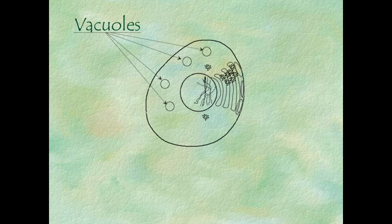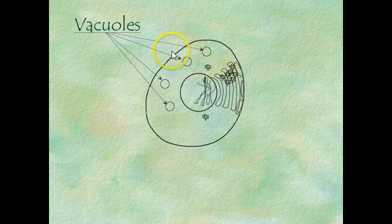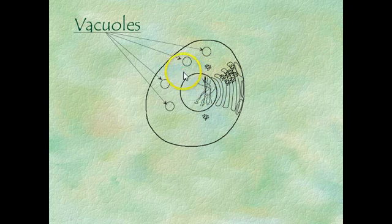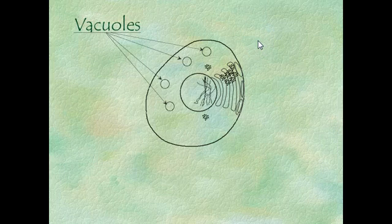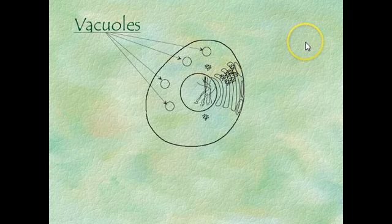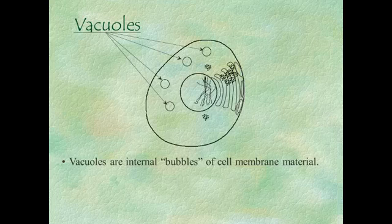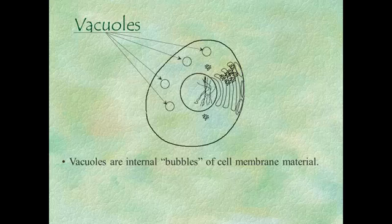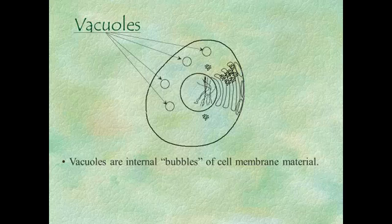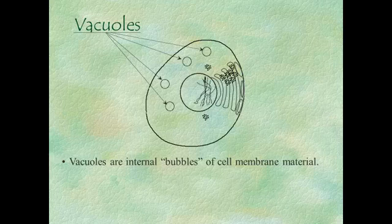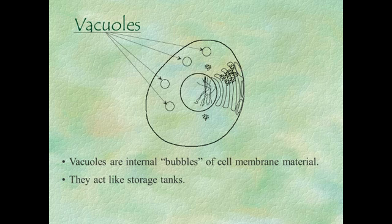The next thing we're going to learn about are vacuoles. We've already talked about the cell itself as being kind of like a soap bubble — it has this very thin membrane that surrounds it and some other little bubbles inside of it. Vacuoles are basically other little compartments within the larger compartment of the cell itself. They're just little containers made of the same phospholipid bilayer material as the cell membrane, and they may contain various substances — like the pockets in your backpack. They act as storage tanks.